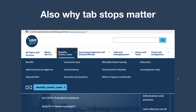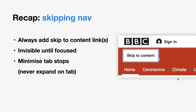This doesn't mean you can't have menus that open on hover — mouse controls are different. But if you're using keyboard access, you generally want opening the menu to be an explicit manual step. To recap: always add a skip to content link — or indeed links. If you have particularly intense navigation, you might want more than one. Wikipedia, for example, has both a skip to content and a skip to search. Generally keep it invisible until focused, and be sure to minimize your tab stops — pressing tab should not expand content automatically.